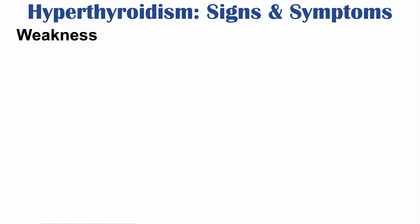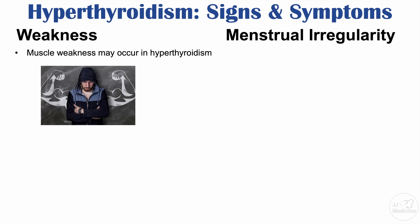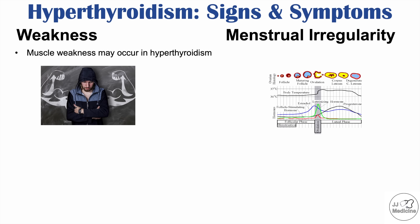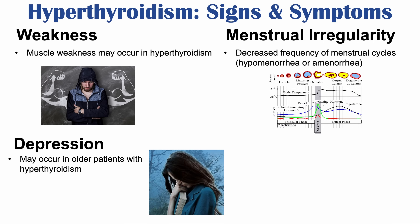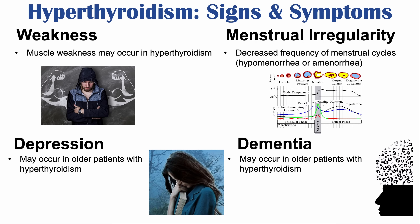Other signs and symptoms include muscle weakness and menstrual irregularities. Because of interplay between thyroid-regulating hormones and gonadotropin-releasing hormones, hyperthyroidism can lead to decreased frequency of menstrual cycles (hypomenorrhea) or complete cessation (amenorrhea). Depression and dementia-like symptoms can also occur, and these are more likely in older patients with hyperthyroidism.